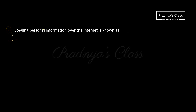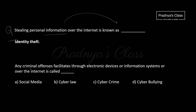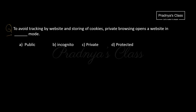Here is the first question: stealing personal information over the internet is called identity theft. The next question: any criminal offense facilitated through electronic devices or information systems over the internet is called — the correct choice is cyber crime, since it involves crime with the use of an electronic gadget. Next MCQ: to avoid tracking by websites and storing of cookies, private browsing opens a website in — the correct choice is incognito mode.